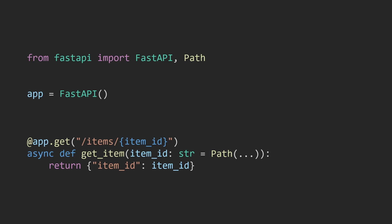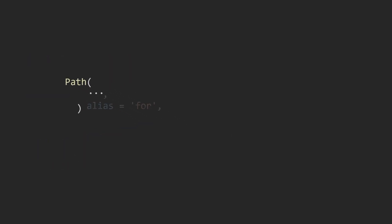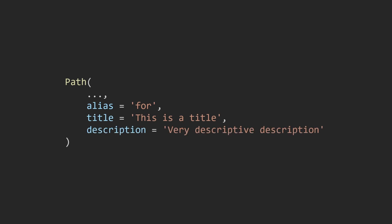Let's take a look at some of the arguments we can pass into the Path function. First up is the alias — we can use this if we want our path parameter to be named something different from the variable we use in the function. This is very useful if you want a path parameter that is a Python keyword like 'for'. Then we have the title argument, used in the docs to provide a title for the specific path parameter, and a description we can provide as well, also used in the docs.